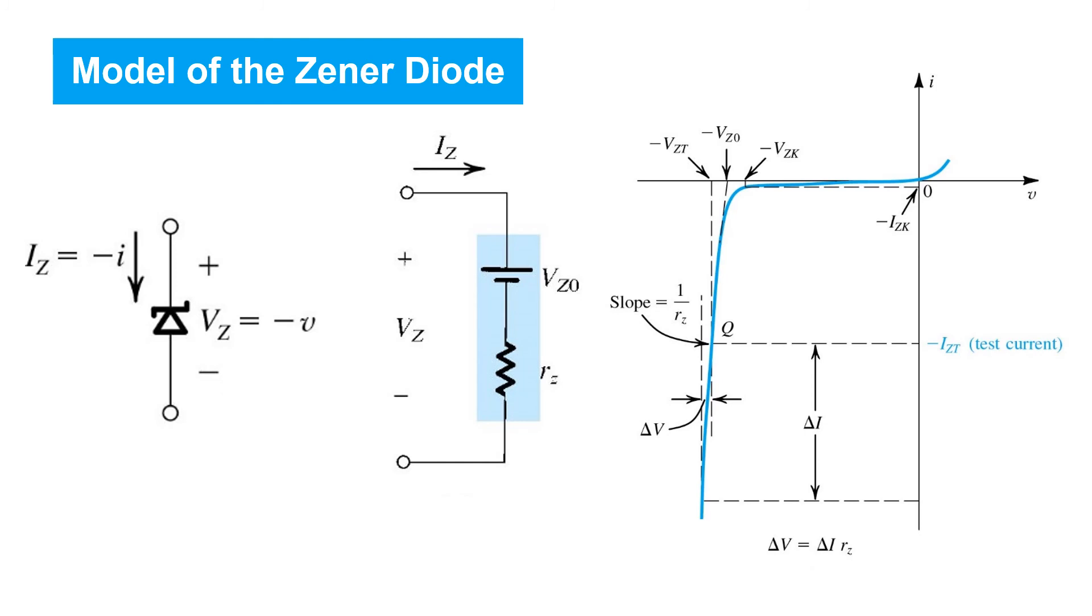Now, if we consider the zener diode's IV characteristic only under reverse breakdown, it in fact looks exactly the same as the IV characteristic of this equivalent circuit shown here. That is, it's a series combination of a constant DC voltage source, the value of which can be found by taking the linear portion of this curve and extrapolating it back to the point where the current is zero, VZ zero, in series with a resistance, RZ, that captures the slope of the IV characteristic under reverse breakdown.